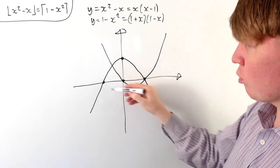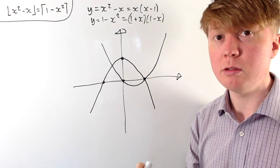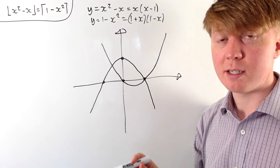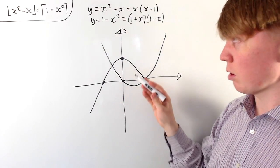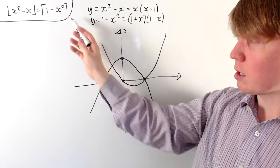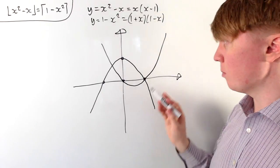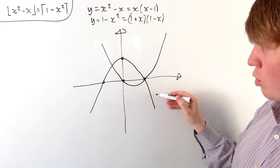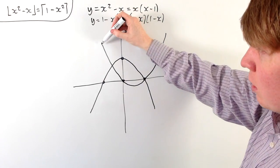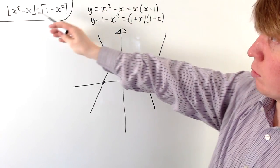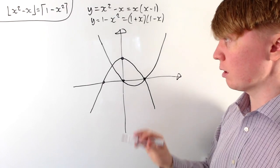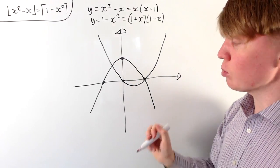We're interested in the region where the two functions are close to each other. Going far to the left, the floor of x squared minus x becomes very large while the ceiling of 1 minus x squared becomes very small, and similarly on the right. So we only need to focus on the region where they're close. We'll be particularly interested in when function values lie between certain integers.